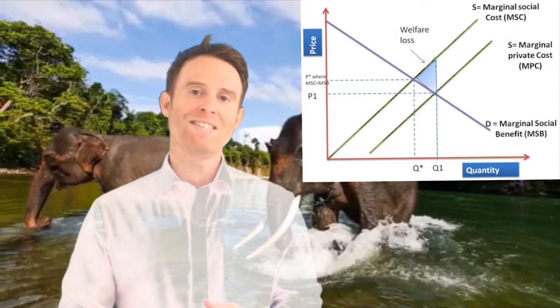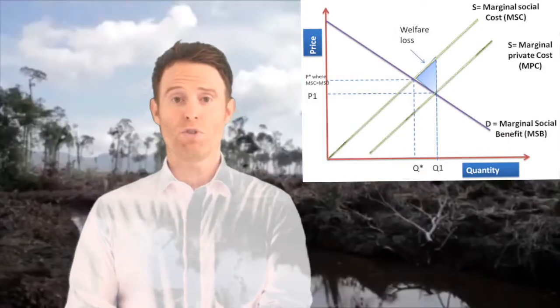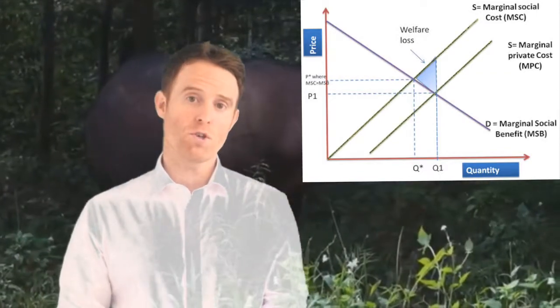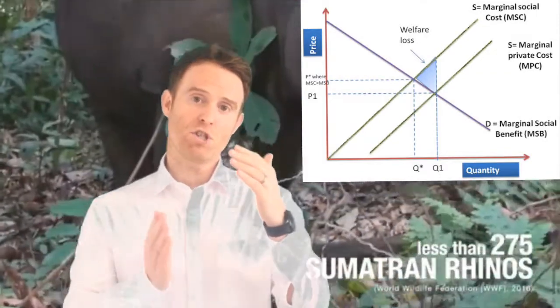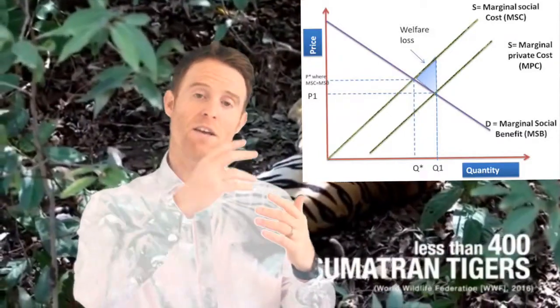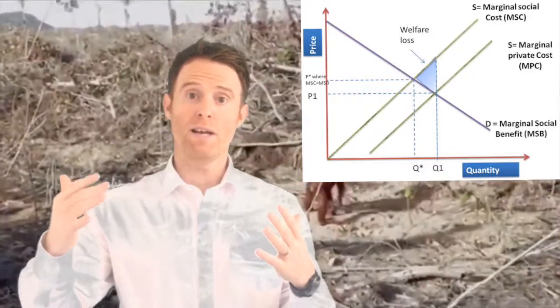Now, because it's a negative externality related to production, we're considering the cost of that production. And therefore, the marginal social cost should be higher than the marginal private cost on that vertical axis, because there's a greater cost to society than the cost to the private transaction.